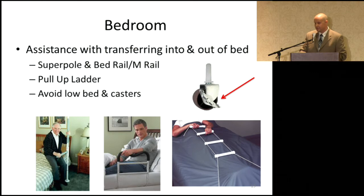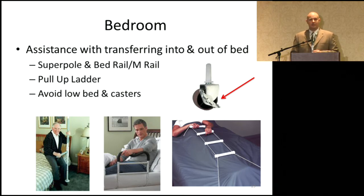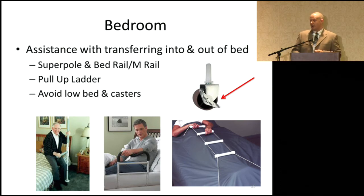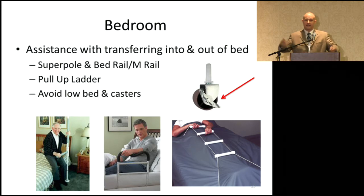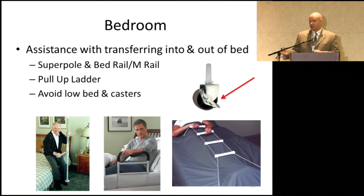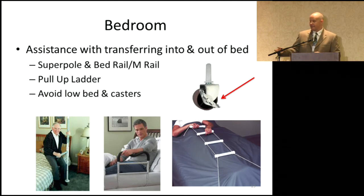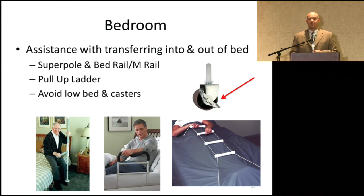Moving into the bedroom — talking about assistance with transfers on and off the bed. Super poles can be used here with a horizontal pole extending out, giving you leverage with both vertical and horizontal grip. They swivel out of the way, which is nice. A more portable option is called an Emerald — it has legs that slide right underneath the mattress. This helps with bed mobility such as turning and maneuvering, and helps you stand up and turn over at night. A bed ladder can also be attached to the foot of the bed to help pull yourself up. When transferring, make sure any bed casters are locked so the bed doesn't scoot across the floor.